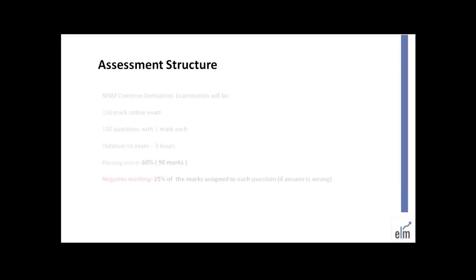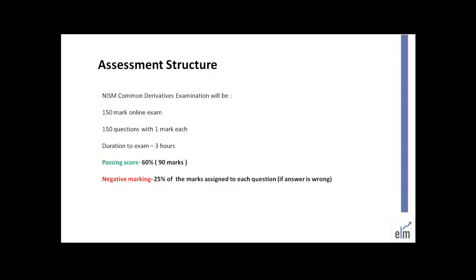Let us look at the assessment structure of this exam. It is a 150-mark online exam with 150 questions, one mark each. The duration is 3 hours and there is a negative marking of 0.25 marks for every wrong answer. To pass, you need at least 60%, that is 90 marks, to get the certificate. For other exams like NISM Series 1, 4, and 8 — equity, interest rate, or currency standalone — the duration is 2 hours, but the passing score remains the same at 60%.